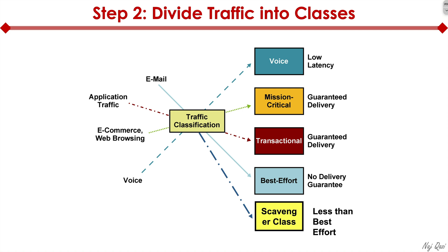Email traffic gets best effort mapping. Application traffic may get transactional level, which is guaranteed delivery. E-commerce and web browsing, because it might be critical to your business, also gets guaranteed delivery and is classified as mission critical. Voice is considered low latency — super mission critical. Best effort gets no delivery guarantee. Then there's scavenger class, which is less than best effort. For your business, this could be social media or bandwidth-hungry sites like Netflix that might bring your network to a crawl. You proactively give those classes super low priority so they don't crush your network during congestion.